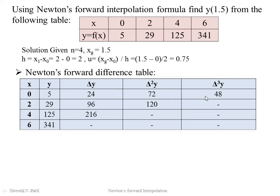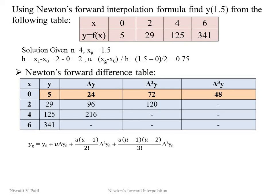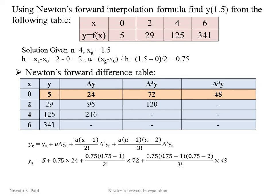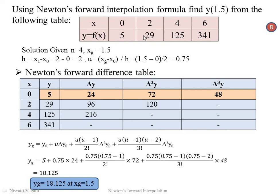Using the first row values from the forward difference table in the yg formula — with n = 4, written up to the third-order term — we substitute y0, Δy0, Δ²y0, and Δ³y0 along with u = 0.75. Solving this gives yg = 18.125. As a check, xg = 1.5 lies between 0 and 2, and yg = 18.125 lies between 5 and 29, confirming the answer is correct.